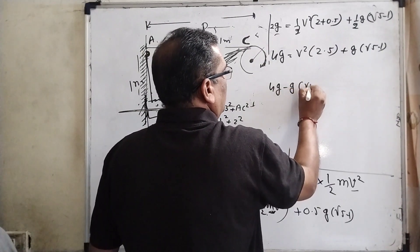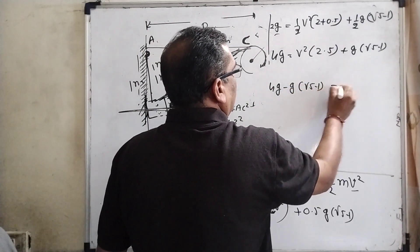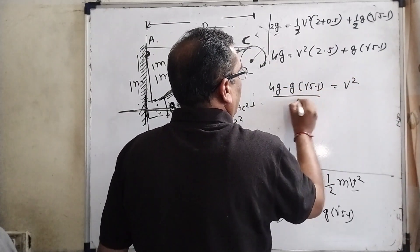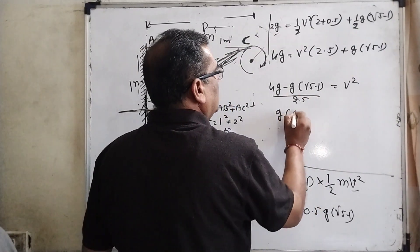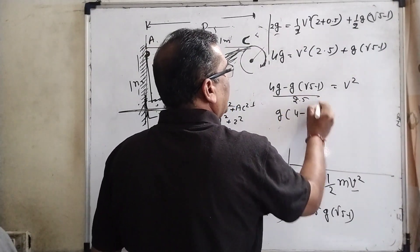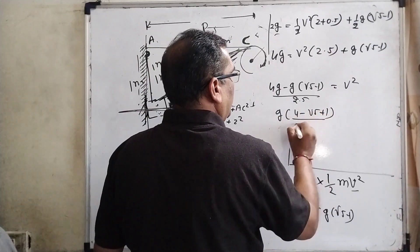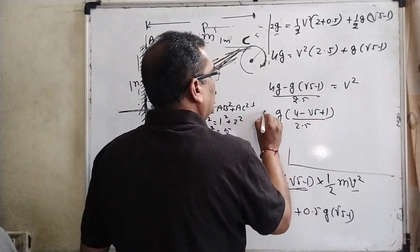So here 2g, LCM and multiply, you will get 4g v squared equals 2.5g times root 5 minus 1 equals v squared. Here g gets common: 4 minus root 5, minus minus plus 1, upon 2.5 equals v squared.